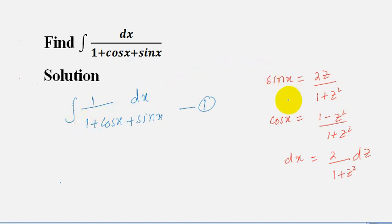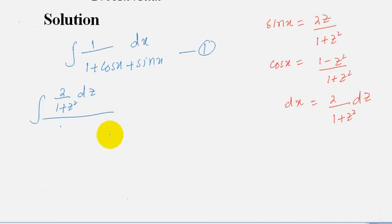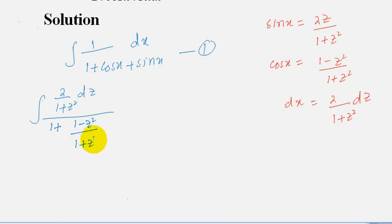We use these values in equation number 1. Equation 1 becomes the integral of [2/(1+z²)] dz divided by [1 + (1−z²)/(1+z²) + 2z/(1+z²)], where we have substituted dx, cos(x), and sin(x) respectively.